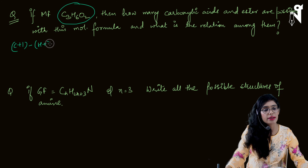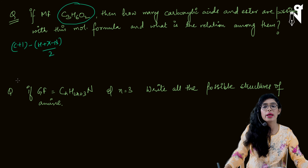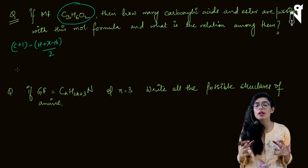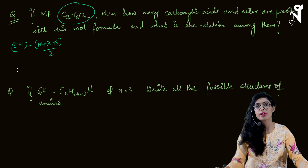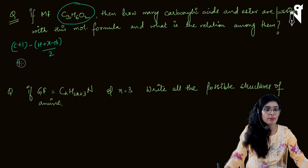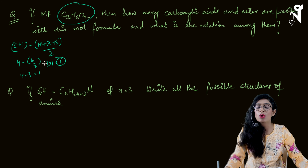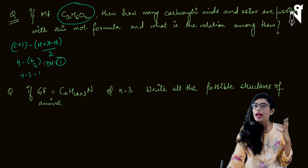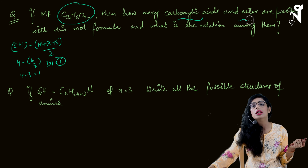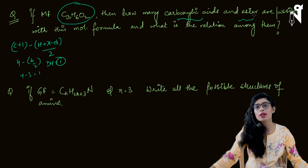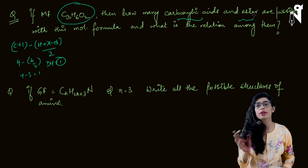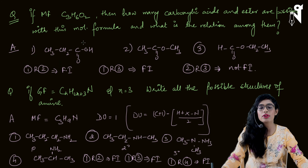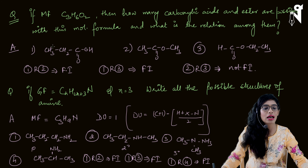For C3H6O2: DU = (3+1) − 6/2 = 4 − 3 = 1. So DU is one, meaning there is only one double bond — which is the C=O of the carboxylic acid or ester. Apart from that double bond there is no other double bond or cyclic chain. So we just have to form simple straight-chain structures.